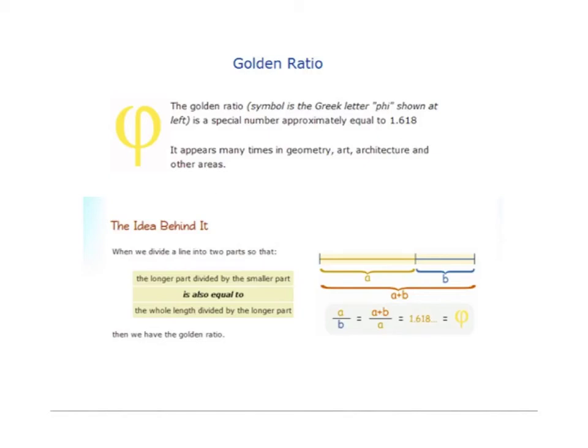This ratio of 1 to 1.618 is called the golden ratio. It appears many times in geometry, art, architecture, and other areas. I'm going to show you some here in a minute.